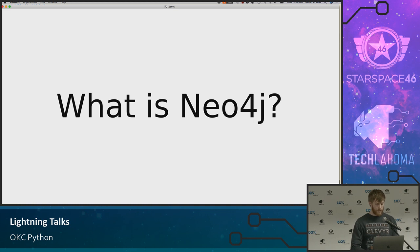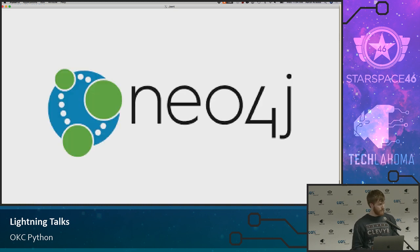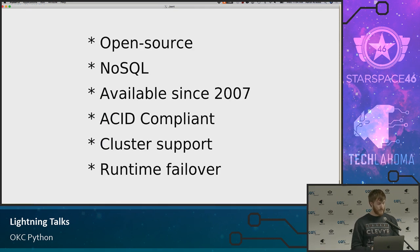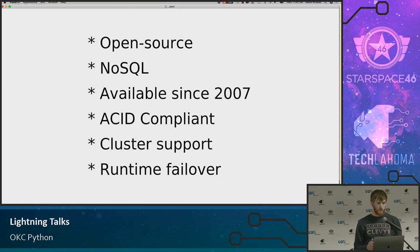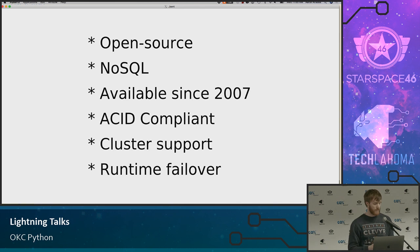So, what is Neo4j? That is the logo right there. Neo4j is a graph database. It's open source, it's a NoSQL database, which means it's not relational and does not use SQL. It's been around since 2007, so it is not a new buzzword. It is ACID compliant for everyone who likes transactions in their databases. It's got cluster support and runtime failover — the generic buzzwords that make for a solid database.